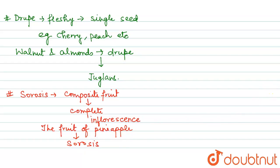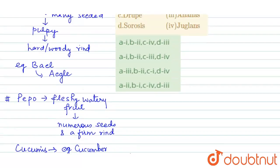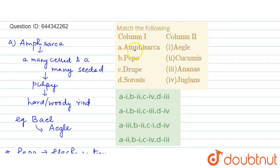So if we see here, option A matches with first, B matches with second, C matches with fourth, and D matches with third. So here the correct option is option first.